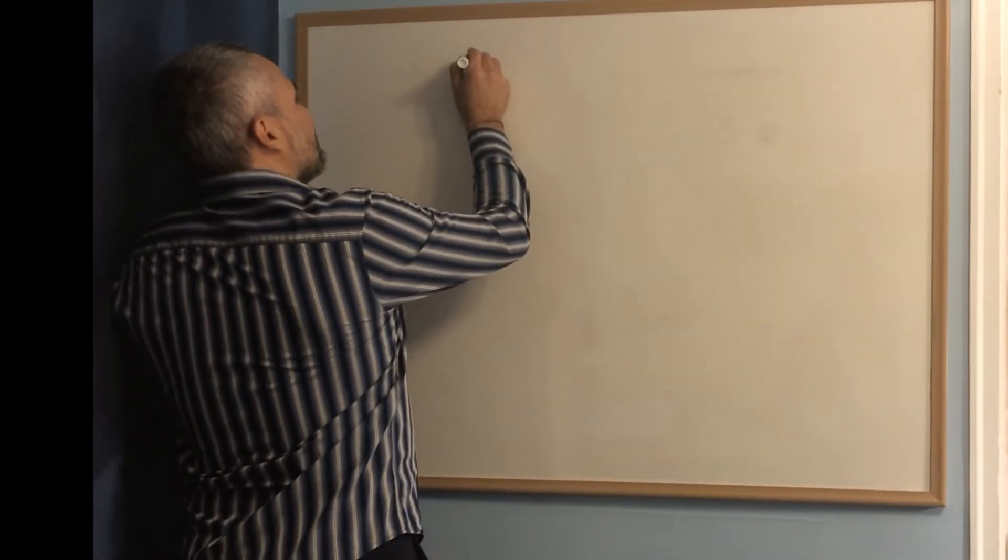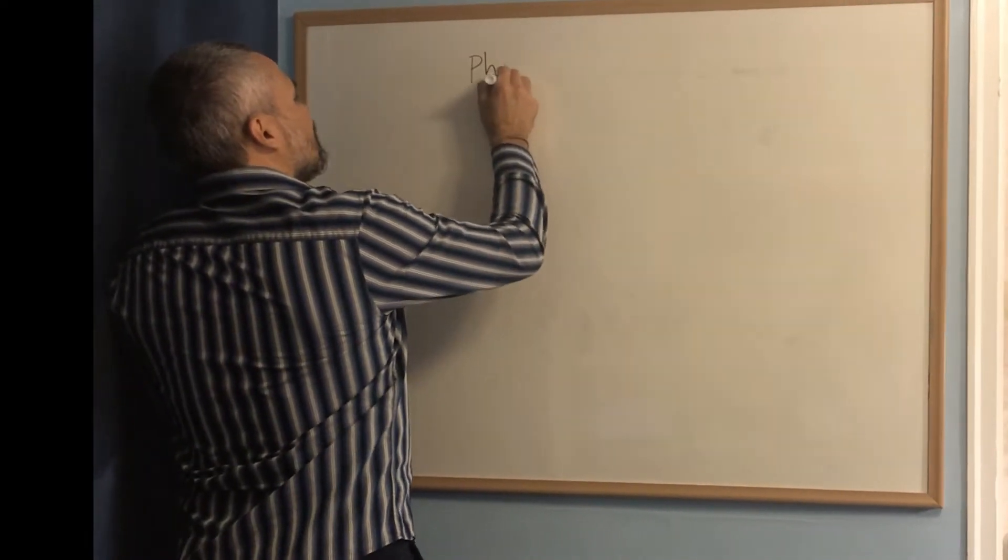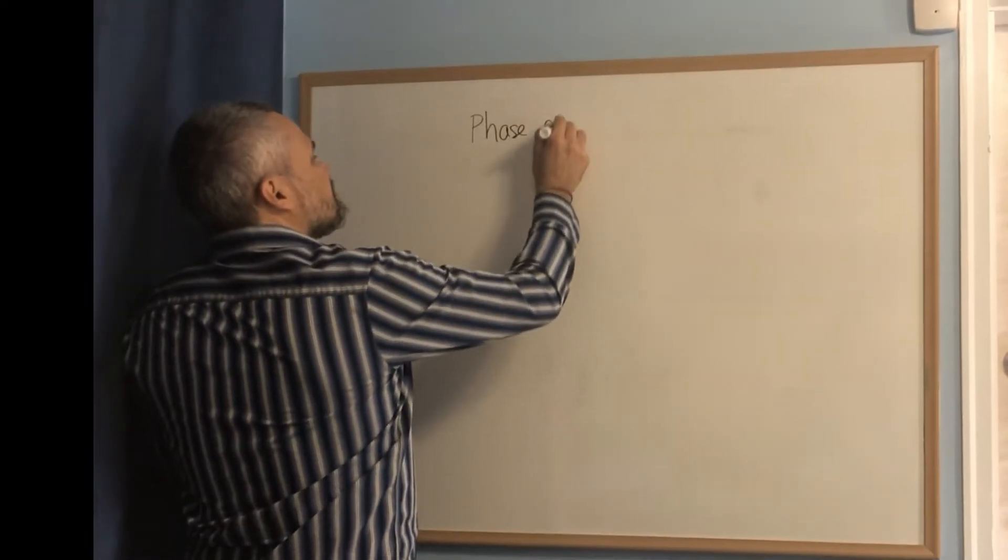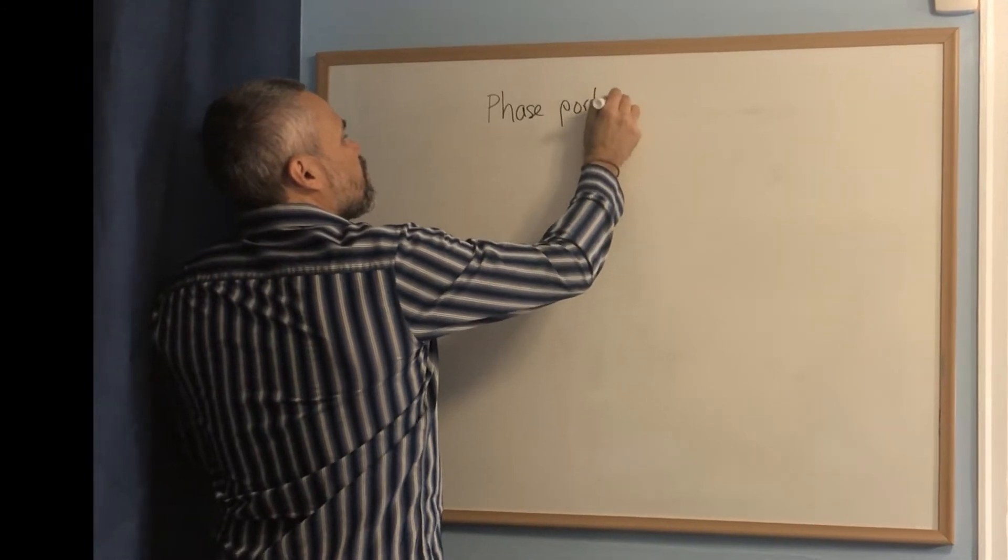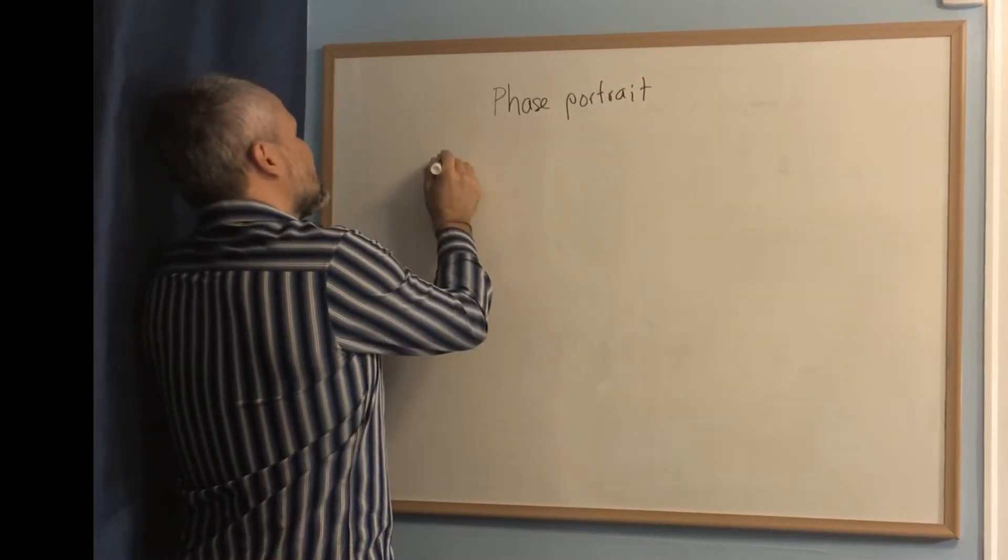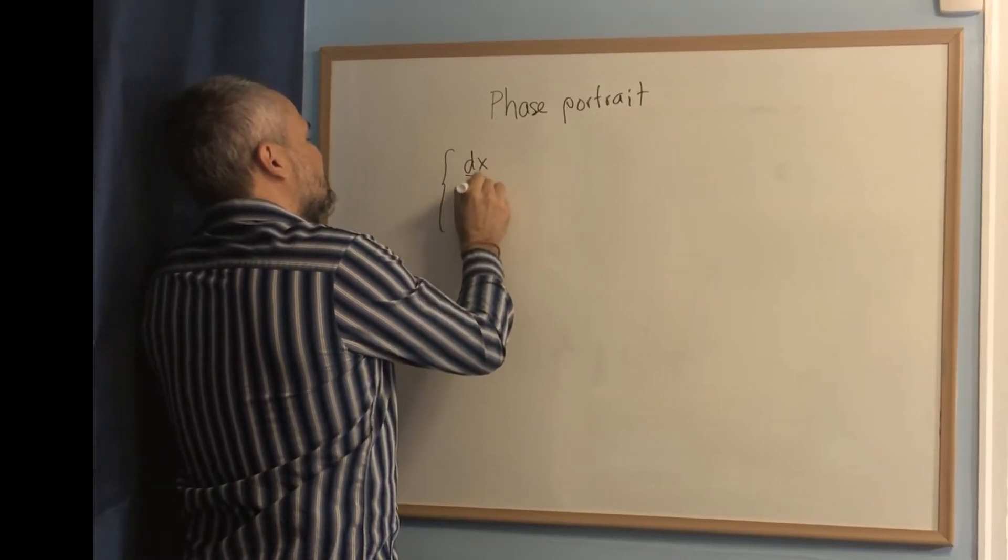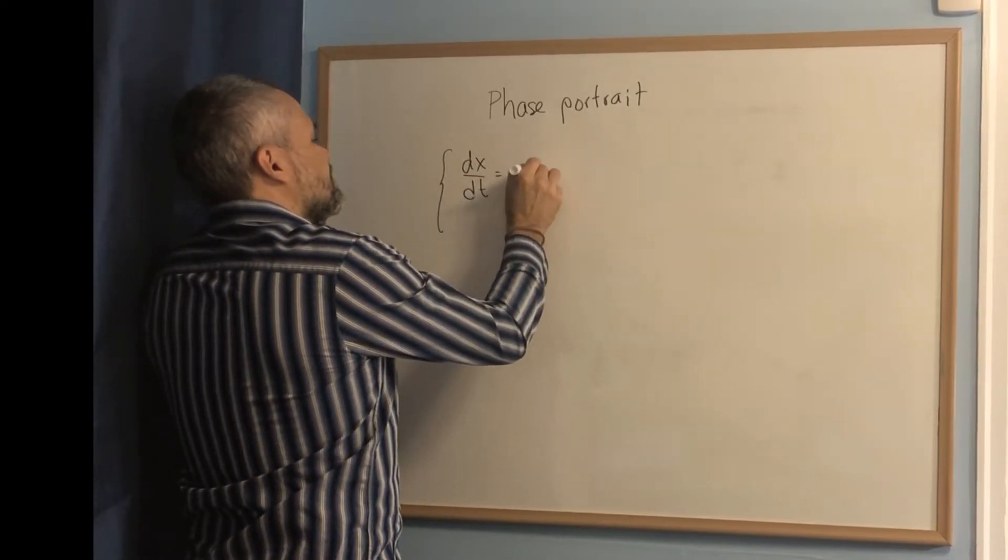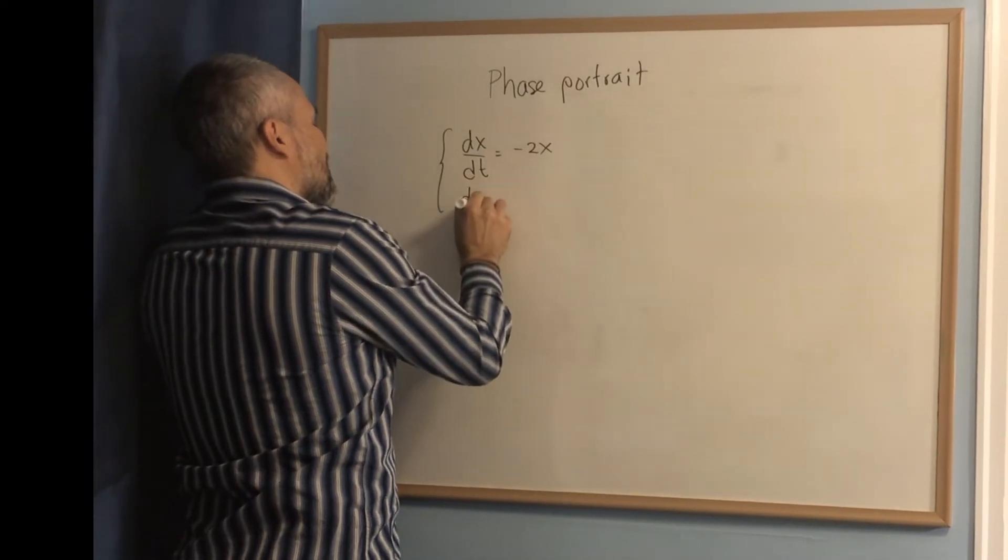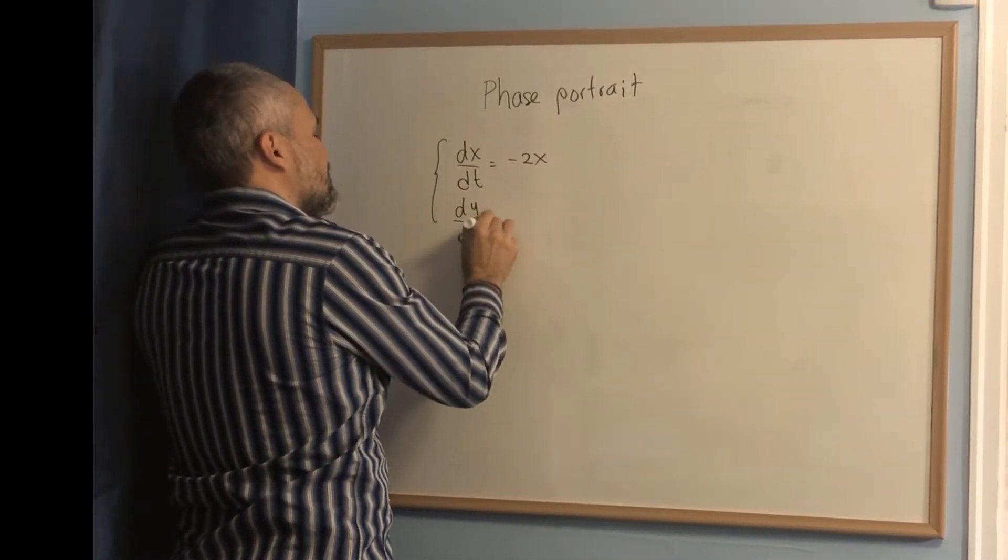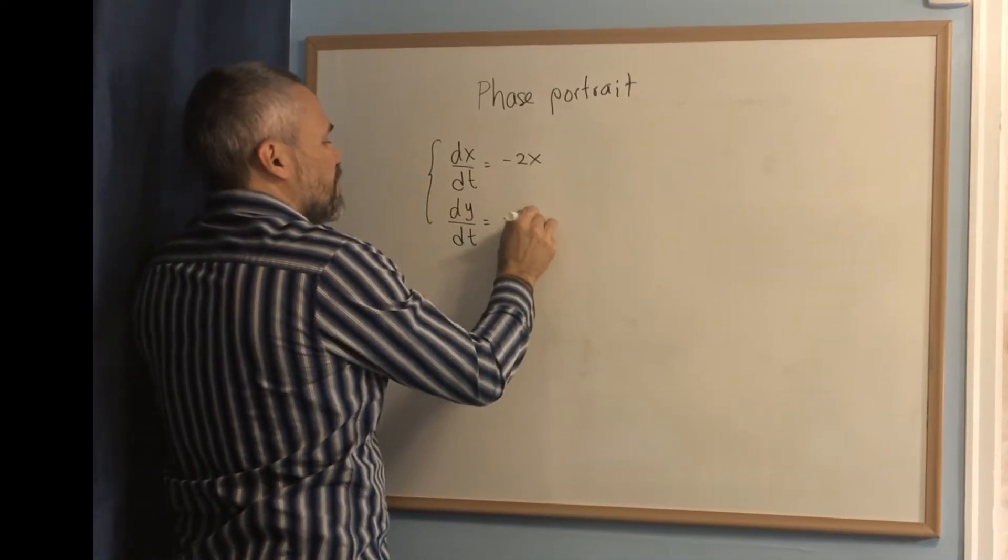Let's do an example of a phase portrait and let's consider this linear system: dx/dt equals negative 2x and dy/dt equals negative 2y.